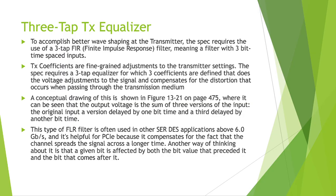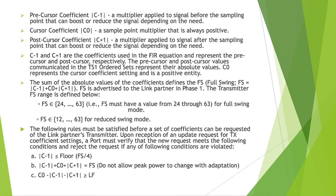Cursor coefficients are of three types: precursor coefficient, postcursor coefficient, and cursor coefficient. A precursor coefficient is a multiplier applied to the signal before the sampling point — it can boost or reduce the signal depending on the need. A cursor coefficient is a multiplier applied at the sampling point. A postcursor coefficient is a multiplier applied to the signal after the sampling point — it can also boost or reduce the signal depending on the need.